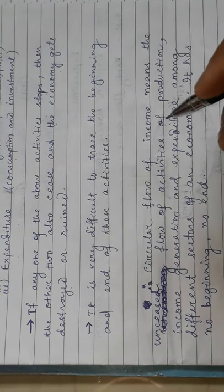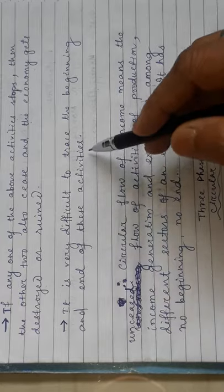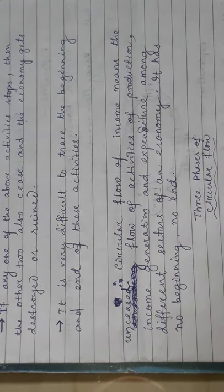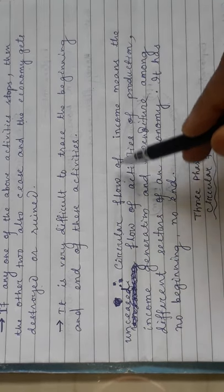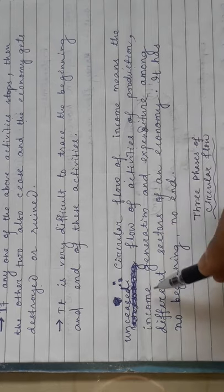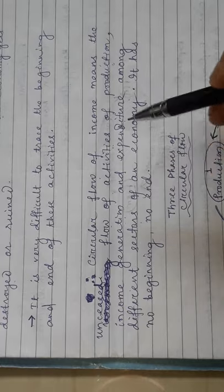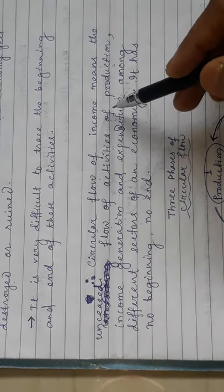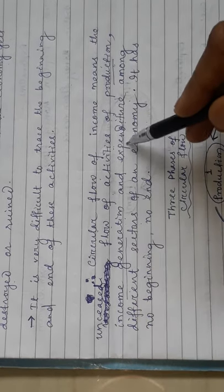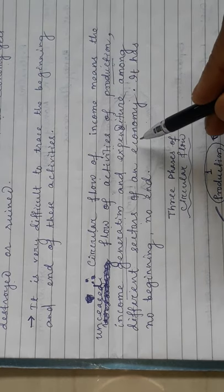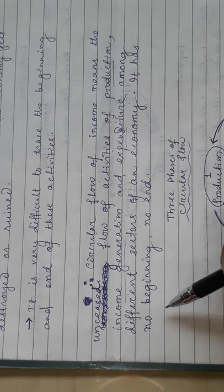It is very difficult to trace the beginning and end of these activities. The circular flow of income means the unceasing flow of activities of production, income generation, and expenditure among different sectors of an economy. It has no beginning and no end.